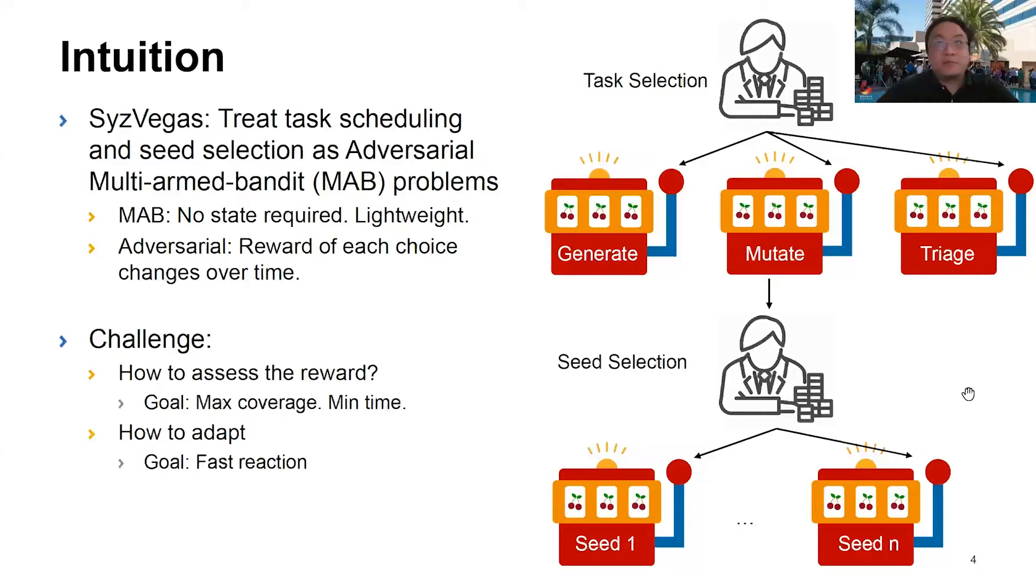In the MAB problem, there is a gambler, aka Syzkaller, facing a number of slot machines, each with a different reward function. In Syzkaller, this is a choice to test, schedule, and seed to mutate. The gambler, without knowing the inner working of the slot machines, needs to play them to find out how rewarding they are, and then devise a strategy to maximize the reward.